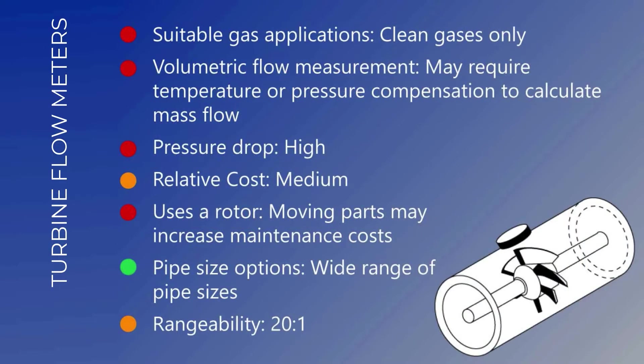Turbine meters use the mechanical action of a spinning rotor as an obstruction to the flow to measure the volumetric flow in the pipe. They are suitable for clean gas applications and provide volumetric flow measurement, which may require temperature or pressure compensation to calculate mass flow. Turbine flow meters have a high pressure drop, a medium relative cost, but use a rotor which may increase maintenance costs. They are available in a wide range of pipe sizes and have a rangeability of 20 to 1.